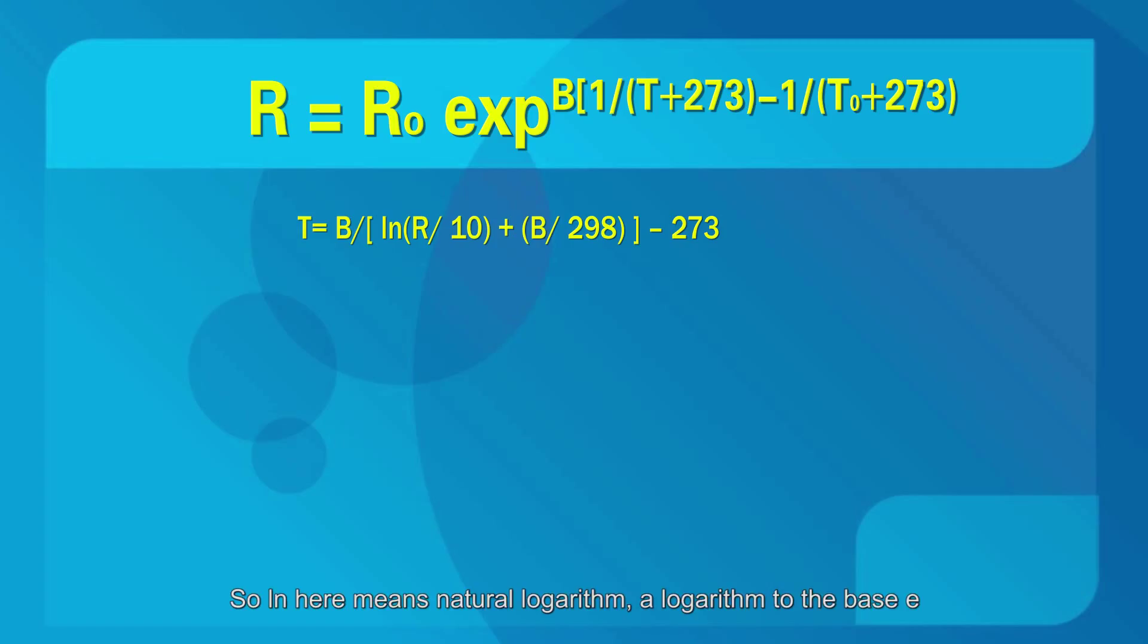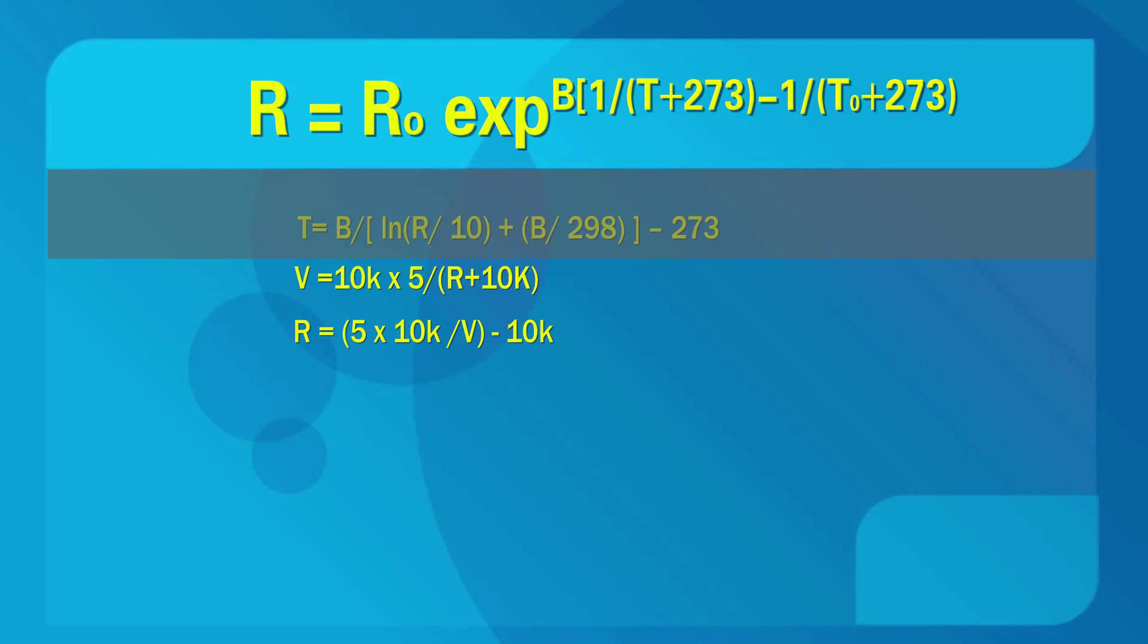So log here means natural logarithm, a logarithm to the base E. If we use a resistor with fixed resistance as 10K ohms, we can calculate the voltage of the analog input pin A0 with this formula. So this relation can be formed. The voltage of A0 is transformed via AD adapter into a digital number A. Then replace V in the relation R equals to 5 multiplied with 10K ohm divided by V, then deducted by 10K ohm. And we can get this.